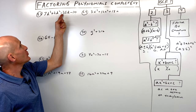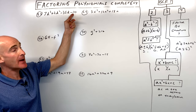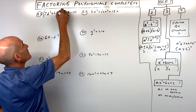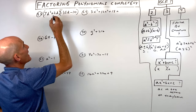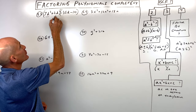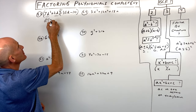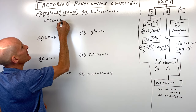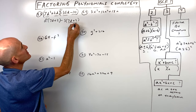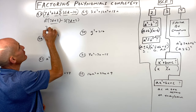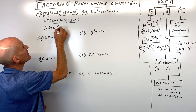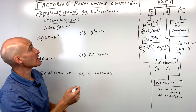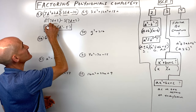Number twenty-five has four terms and no greatest common factor, so we use factoring by grouping. Group the first two and last two terms — they're added together. Factor out d squared from the first pair, giving 7d plus 2. Factor out negative 5 from the second pair, also giving 7d plus 2. Factor out 7d plus 2 to get 7d plus 2 times d squared minus 5. If this had been d squared minus 4, we could factor further as a difference of squares, but in this case we can't.